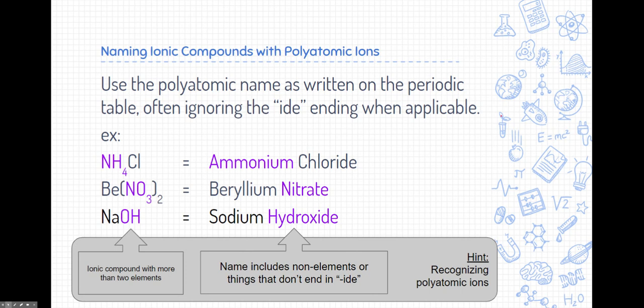Now names are a little bit more challenging, but a couple hints. If names include non-elements or things that don't end in ide, those are two ways we would know that there's polyatomic ions in there. Ammonium, for example, is not an element on the periodic table. But if you look at our list of polyatomic ions, it's there. Nitrate. In our second example, there is an element called nitrogen, but this doesn't end in ide. If it was nitride, that would be nitrogen. This ends in ate. So anything that doesn't end in ide is a good indicator that there's a polyatomic ion involved. The last one doesn't end in ide, hydroxide. So this one's a really challenging one. But again, on the periodic table, there's no element called hydroxide. There's an element called hydrogen and an element called oxygen, but hydroxide is a polyatomic ion and found on our polyatomic ions list.